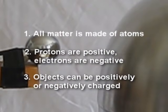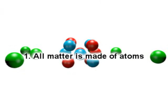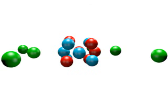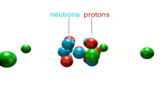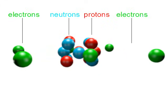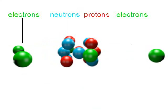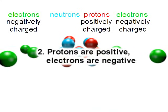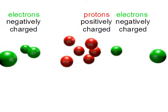There are three things to keep in mind as I explain how Van de Graaff generators work. First, all matter is made up of atoms. In the middle of each atom are protons and neutrons, and spinning around them are electrons. The protons stay in the atom, but sometimes the electrons are free to move away. Second, the protons are positively charged and the electrons are negatively charged. The neutrons are not charged at all, so we'll ignore them.